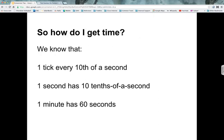So how do you get the time from this count of ticks that you have? Well, what do we know about t, the number of ticks? We know that there's 1 tick every tenth of a second and every second there are 10 tenths of a second and every minute has 60 seconds in it.